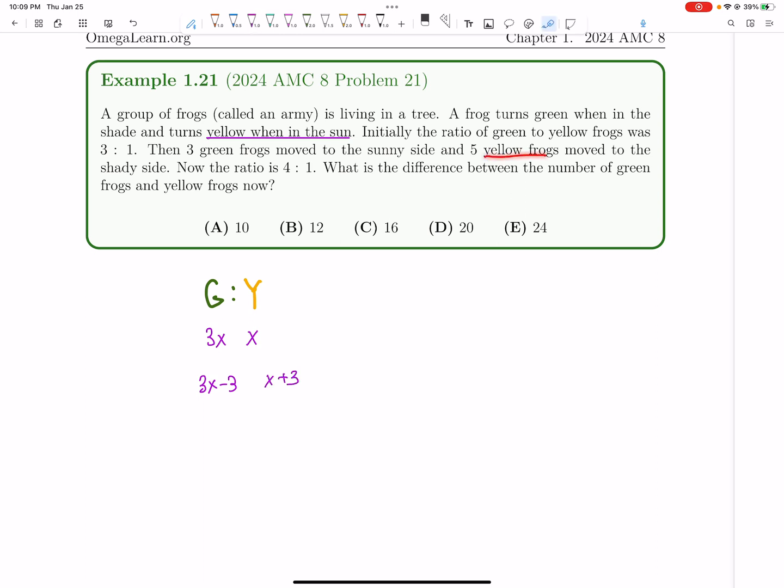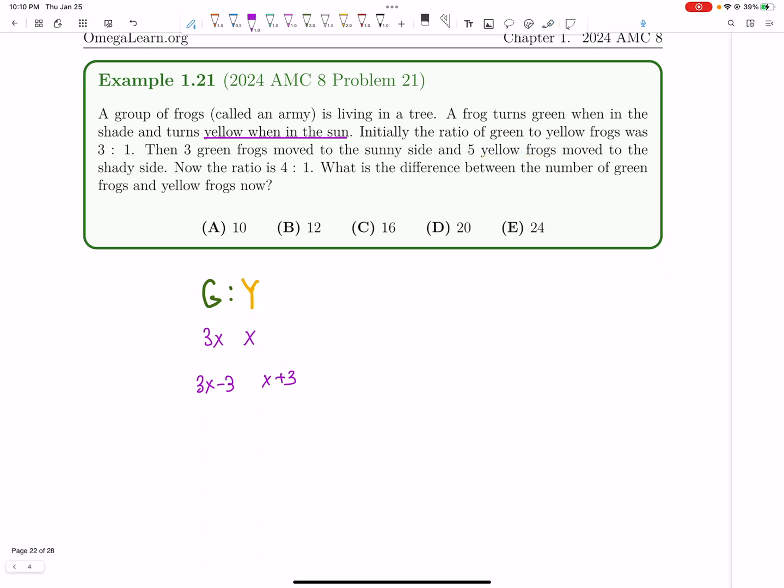And then five yellow frogs, five frogs that are initially yellow, become green. So then we subtract five, so x minus 2 yellow, and then 3x plus 2 green.